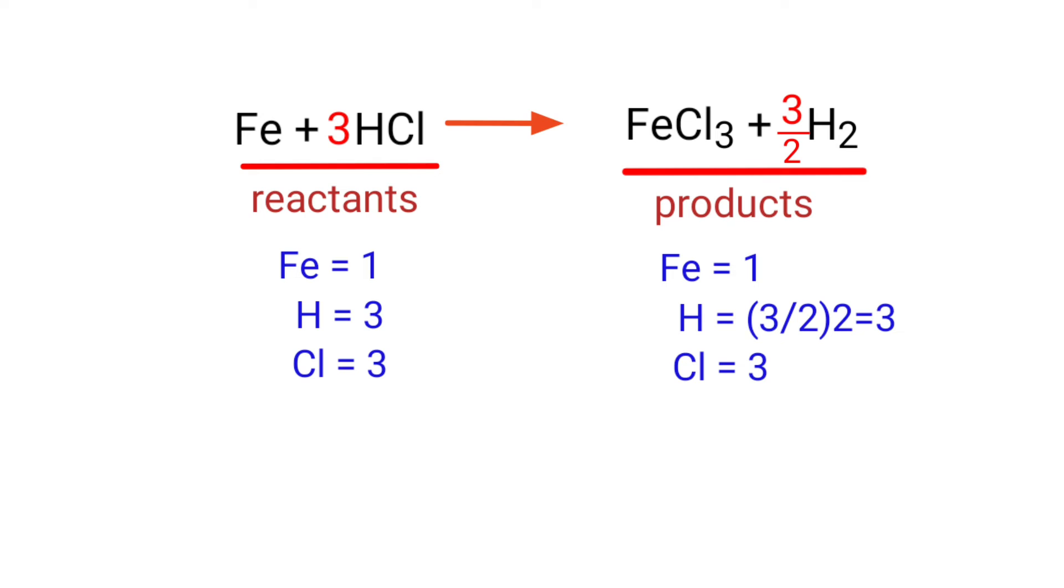In this equation, three by two is a rational number. We don't use rational numbers for a chemical equation. So to get whole numbers, we need to multiply the equation by a coefficient of two.